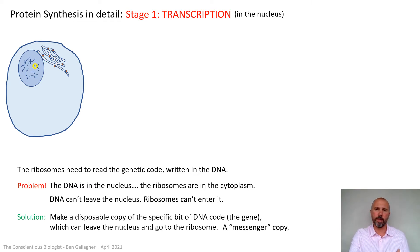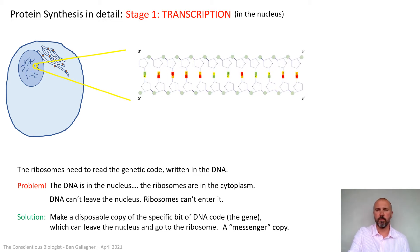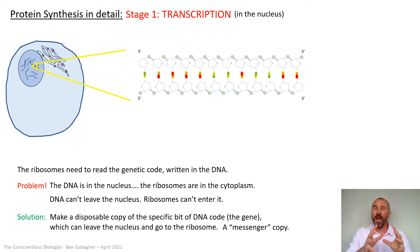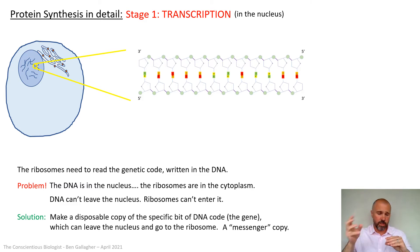Transcription is how that messenger copy is created — it's the first of the two main processes. If we enlarge a section of DNA, that might be the gene we want to read. This diagram should be familiar from the DNA biochemistry lesson — go back and watch it if you haven't already. Everything in these lessons builds on the previous ones. If you're ever struggling with your A-level course, it's probably because you've missed something foundational, so go back and look at previous videos.